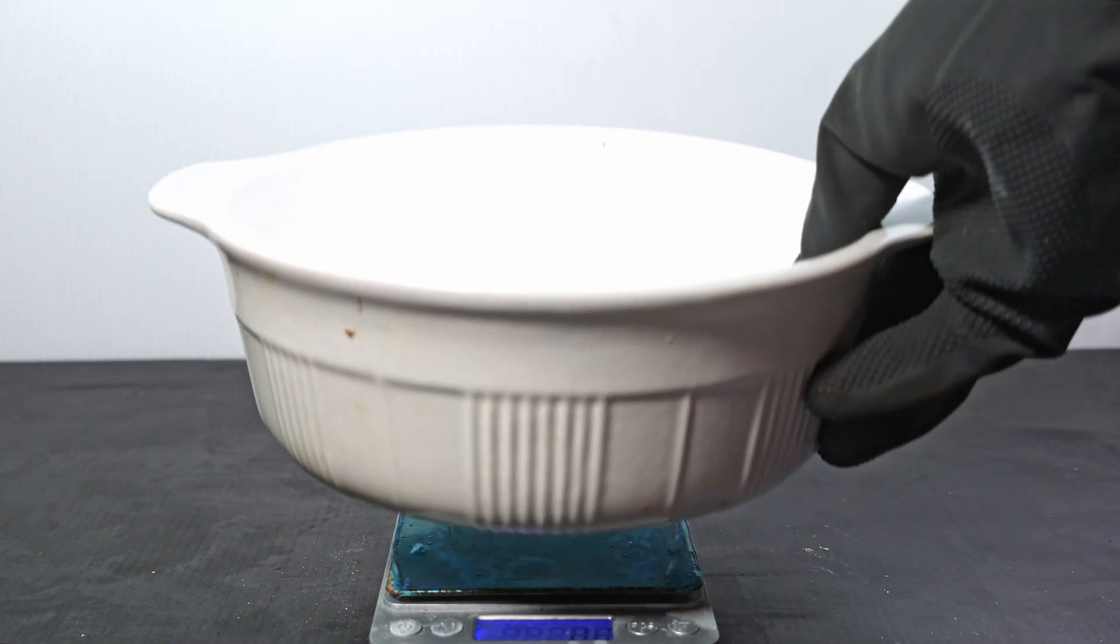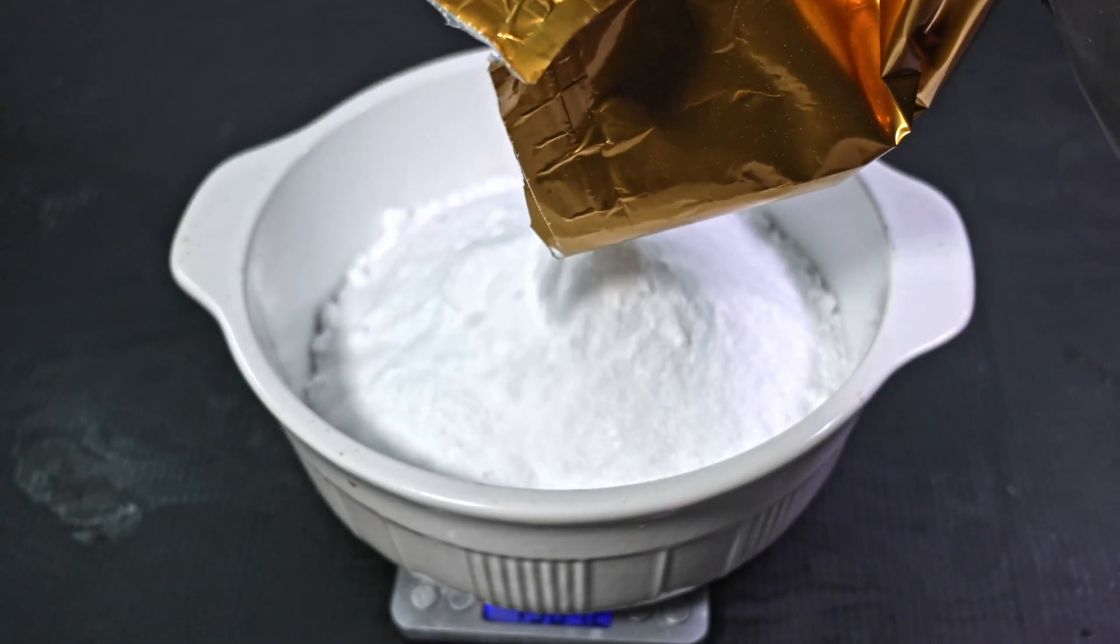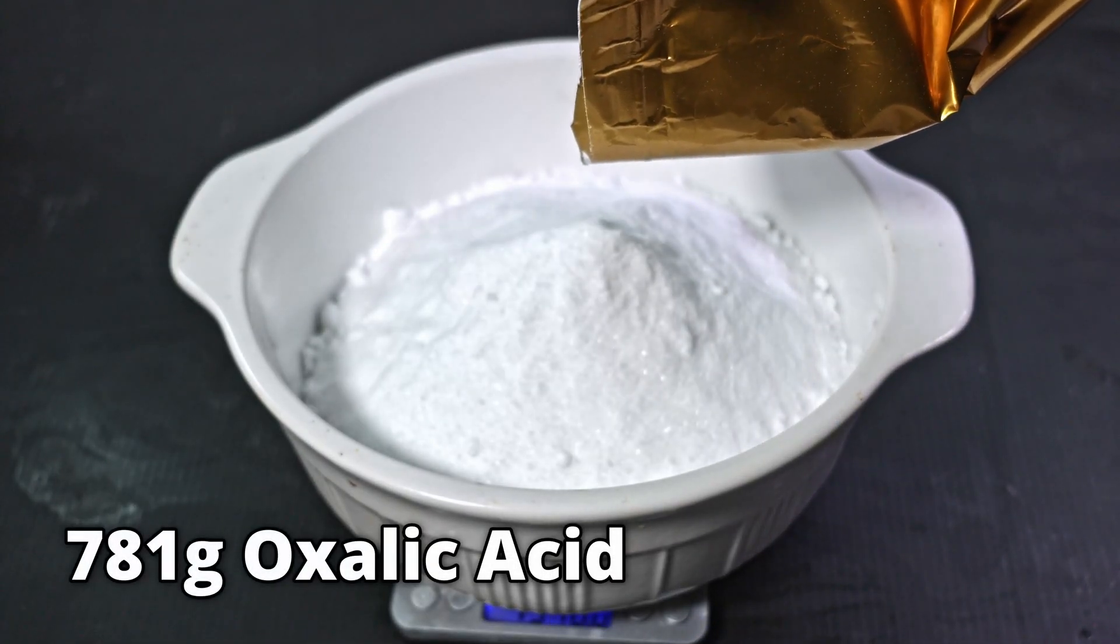Next, I'm going to try a heating dish. I first weigh it empty to get a baseline value. The weight is 1,195 grams. I add a little less than 2 pounds of oxalic acid, raising the weight to 1,976 grams.